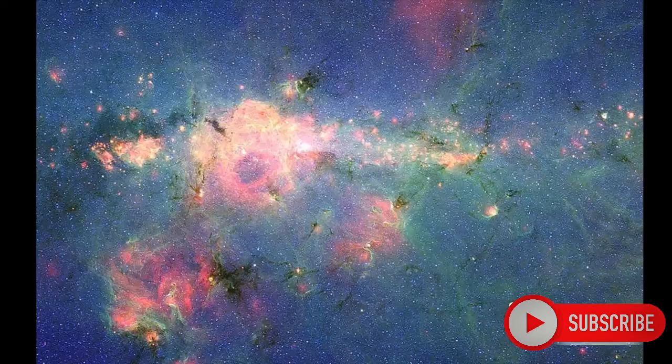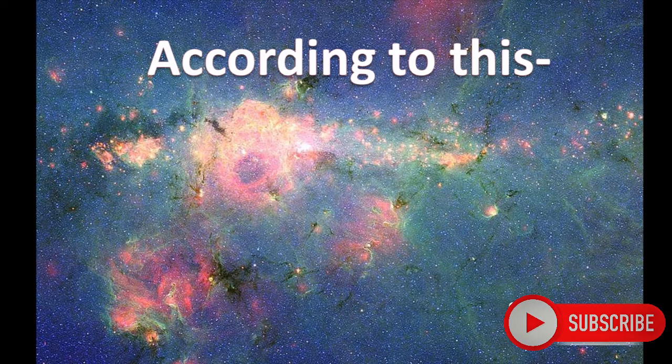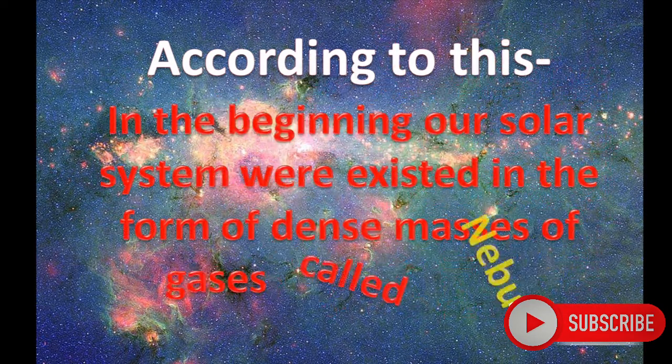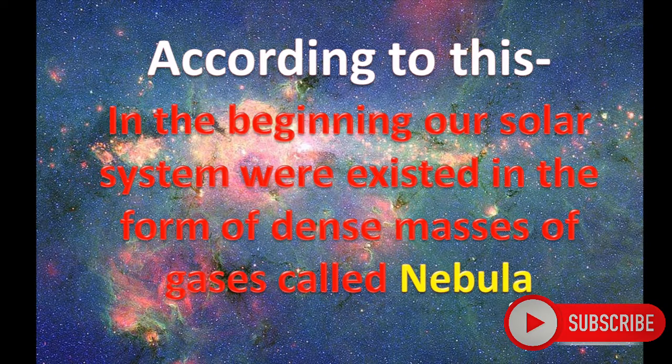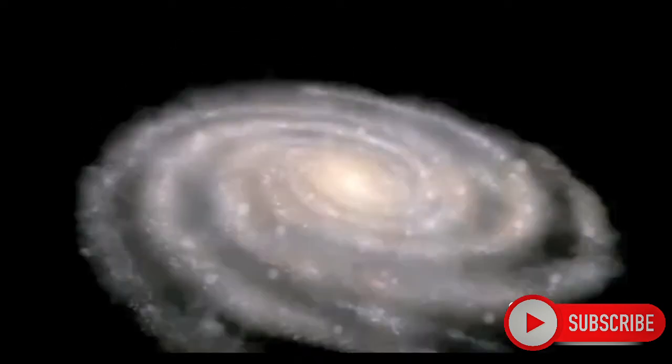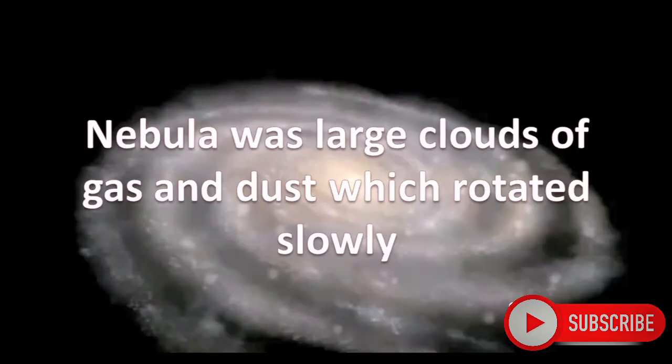According to this, in the beginning, our solar system existed in the form of dense masses of gases called Nebula. Nebula was a large cloud of gas and dust, which rotated slowly.